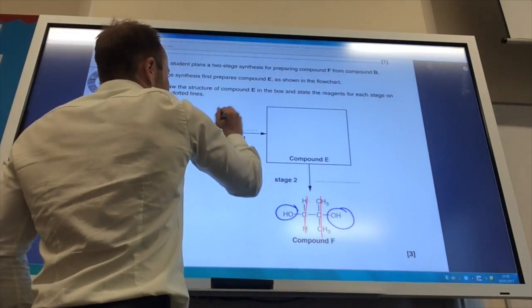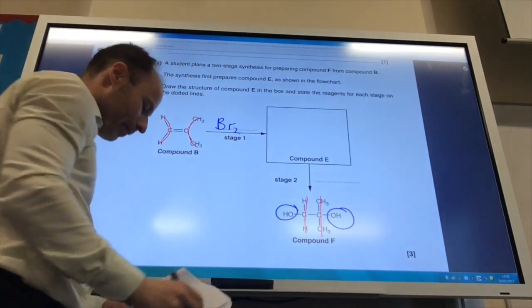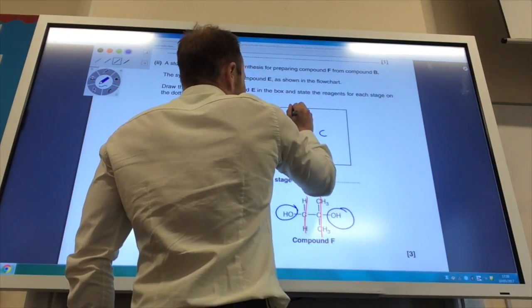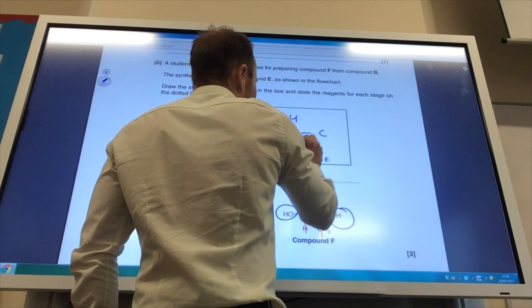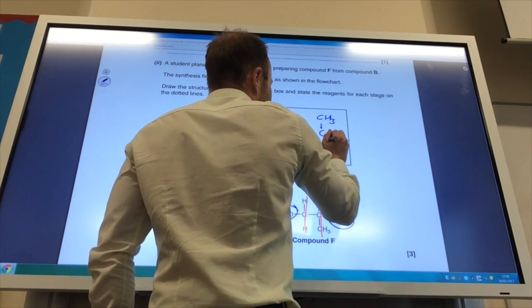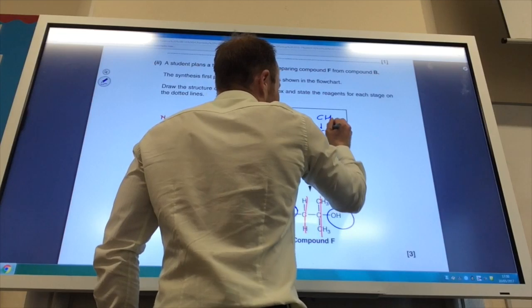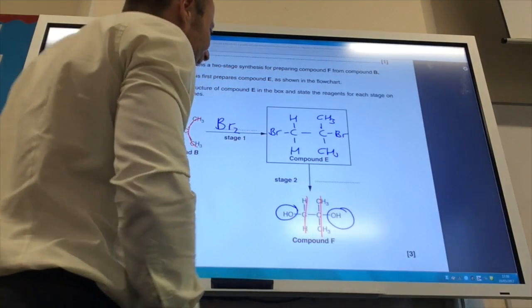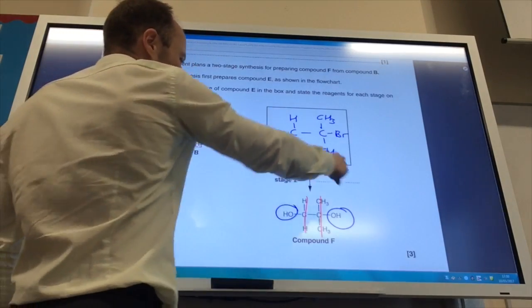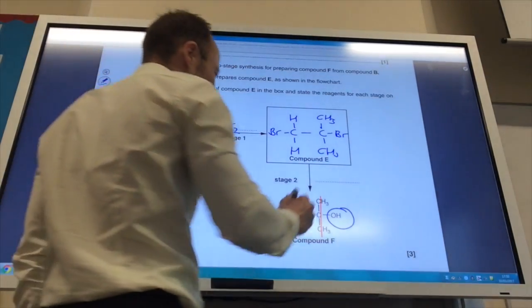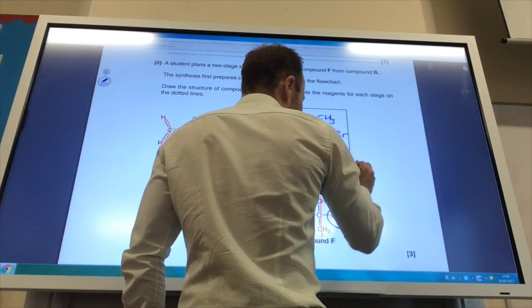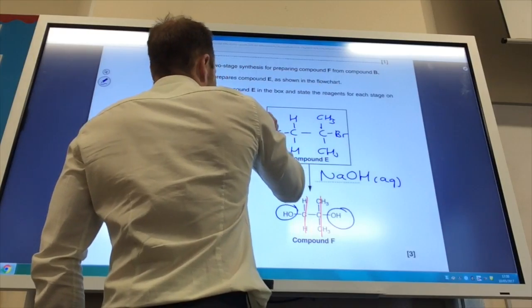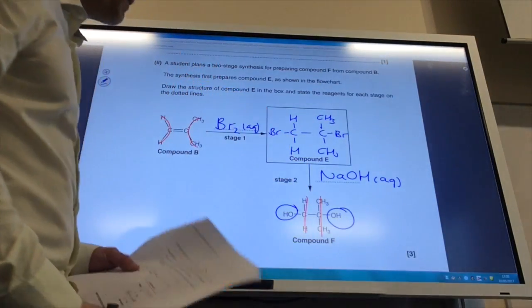And you react it with Br2, and onto each carbon, you would add a bromine atom. The good old test for a carbon-carbon double bond. And then, you've got to replace those bromines with the OH. So, how would you do that? You would add sodium hydroxide solution, like so. And that's all there is to it.